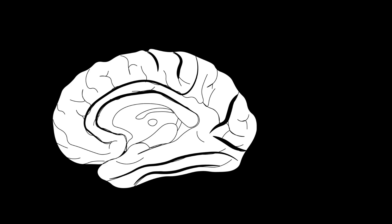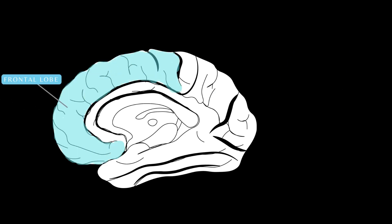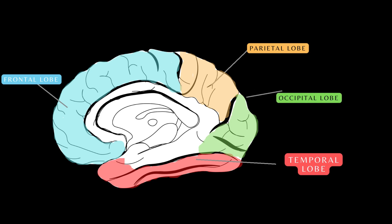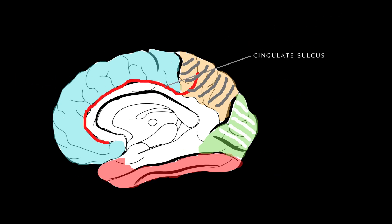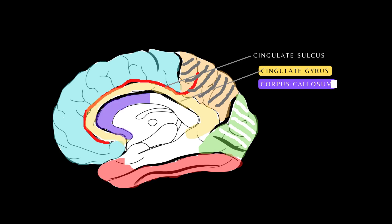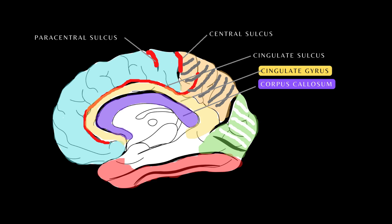On the medial or midsagittal section of the brain, we see the frontal lobe, the parietal lobe, the temporal lobe, and the occipital lobe. The medial aspect of the parietal lobe is called the precuneus and the medial aspect of the occipital lobe is called the cuneus. Here is the cingulate sulcus, the cingulate gyrus, and inferiorly the corpus callosum — a large bundle of nerve fibers that allows communication between the two cerebral hemispheres. Here are the paracentral and central sulci, both bordering the medial portion of the precentral gyrus.